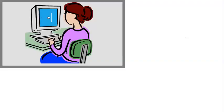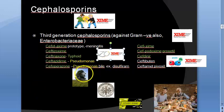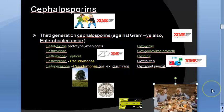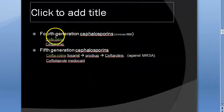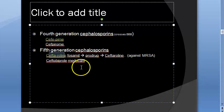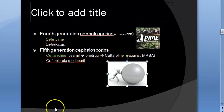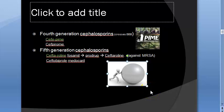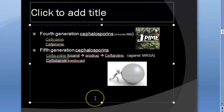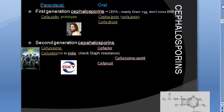For fourth generation, remember cefepime — 'pime' for fourth. For fifth generation, they'll be 'rolling' — ceftaroline. Ceftaroline fosamil is actually a prodrug converted into ceftaroline, and it is active against MRSA — methicillin-resistant Staphylococcus aureus. Another fifth generation drug is ceftobiprole.